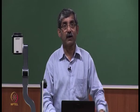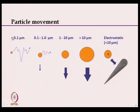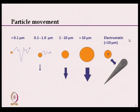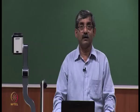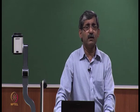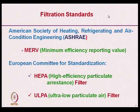Particles less than 0.1 micron will exhibit Brownian motion; 0.1 to 1 micron, 1 to 10 micron — depending on the particle size, different filtration mechanisms are followed. There are different filtration standards available. The most widely used are the American standard — ASHRAE (American Society of Heating, Refrigeration and Air Conditioning Engineering) — which uses MERV (Minimum Efficiency Reporting Value) levels typically from 1 to 16, where 1 is very coarse filtration and 16 is very fine. The European committee for standardization has HEPA (High Efficiency Particulate Arrestants) and ULPA (Ultra Low Particulate Air) filters with different ranges depending on filtration efficiency.